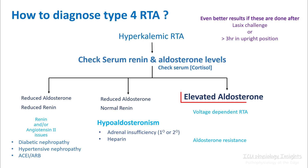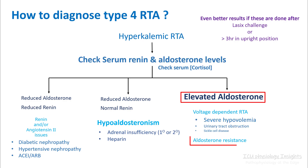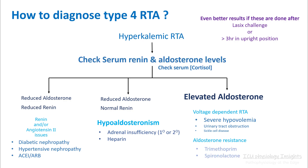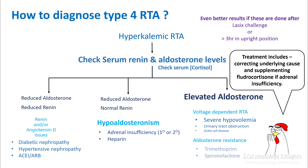If you have elevated aldosterone, you are dealing with either a voltage-dependent RTA or aldosterone resistance. Voltage-dependent RTA is seen in severe hypovolemia, urinary tract obstruction, and sickle cell disease. Medications like trimethoprim and spironolactone cause aldosterone resistance. Treatment involves treating the underlying cause and supplementing fludrocortisone if dealing with adrenal insufficiency.